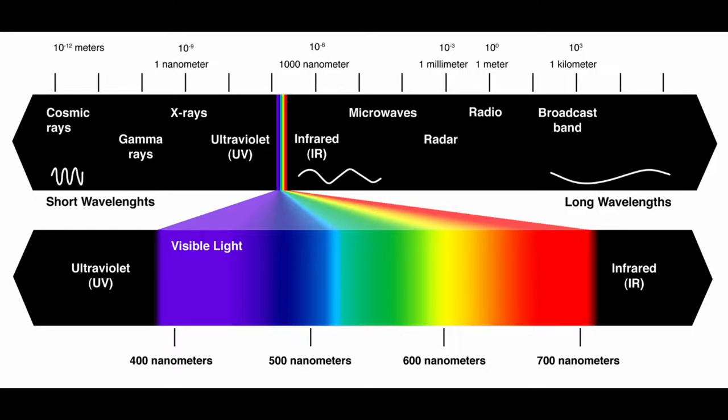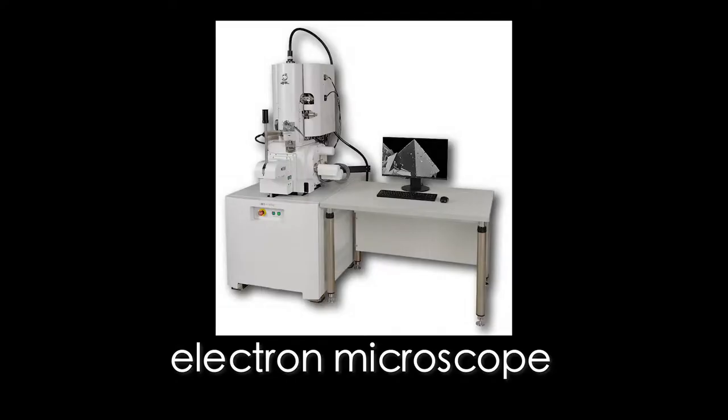One alternative to optical microscopy is the electron microscope. This method overcomes the visible light wavelength limitation. One of the most commonly used electron microscopes in research labs is called the scanning electron microscope, or SEM.